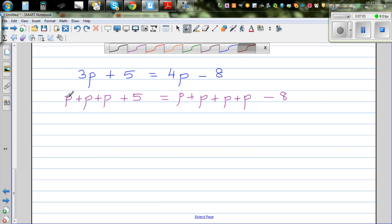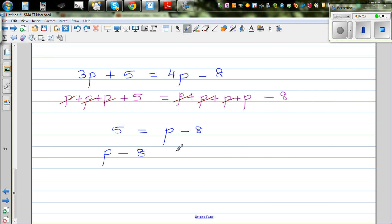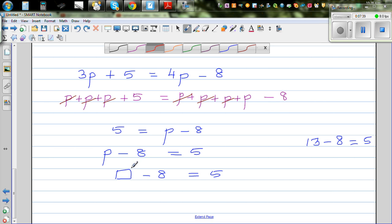So here, you've got 3 p's will get cancelled. So this equation now becomes 5 is equal to p minus 8. But this can also be written as p minus 8 is equal to 5. So here, you're asking the question, what take away 8 gives you 5? Well, 13 take away 8 is 5. So I can write 13 here. So that means your p should be 13.